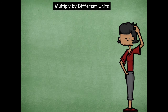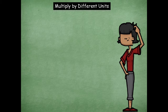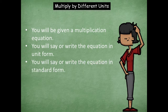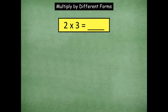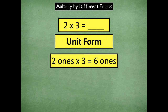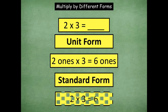Now we're going to move into multiplying by different units — don't let that fool you. You guys have talked about different forms of numbers. Remember standard form is just like two times three, and then unit form is like two ones times three equals six ones. The unit form tells us the unit each number is in, and standard form means you take out the units.